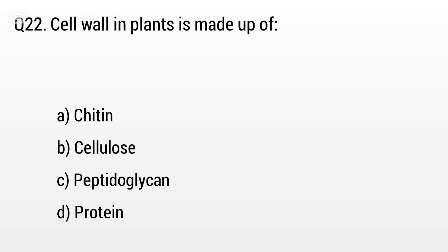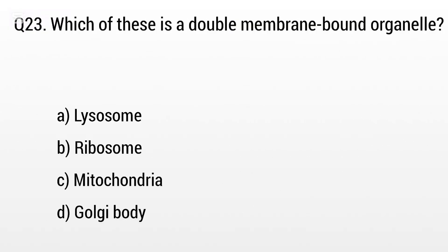Question 22. Cell wall in plants is made up of: Option A: Chitin, B: Cellulose, C: Peptidoglycan, D: Fructose. The right answer is option B, Cellulose.